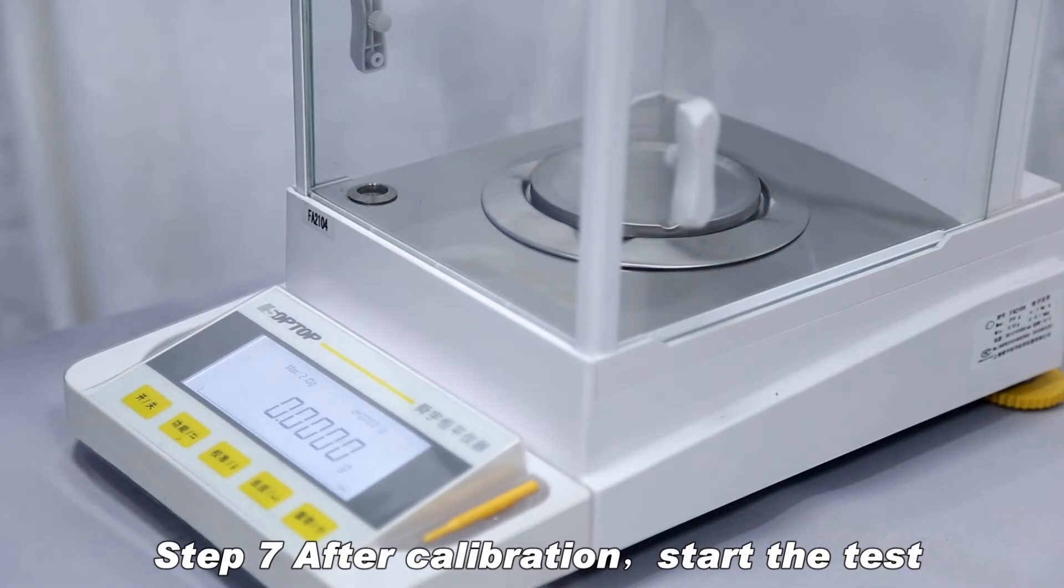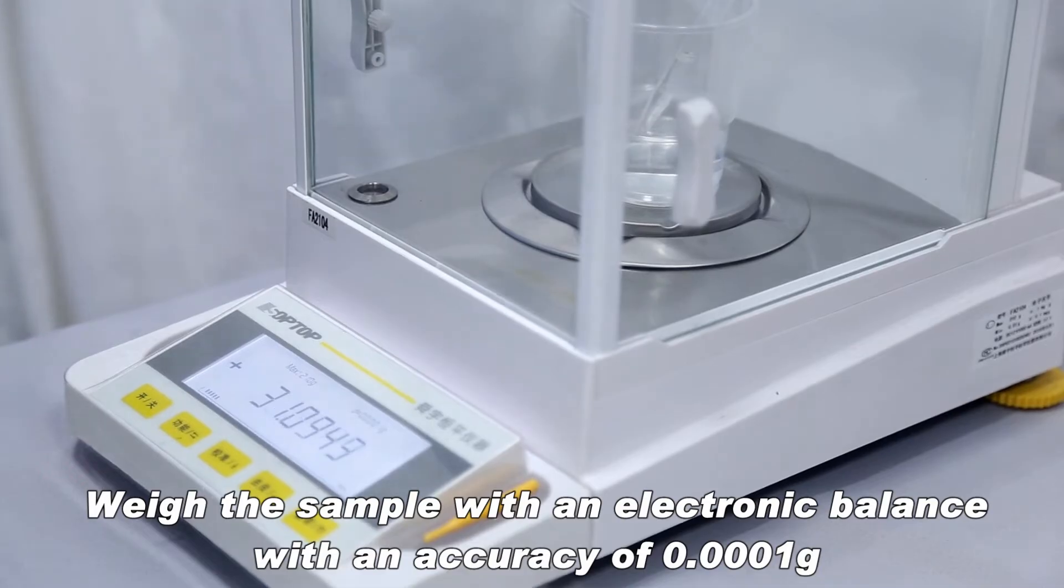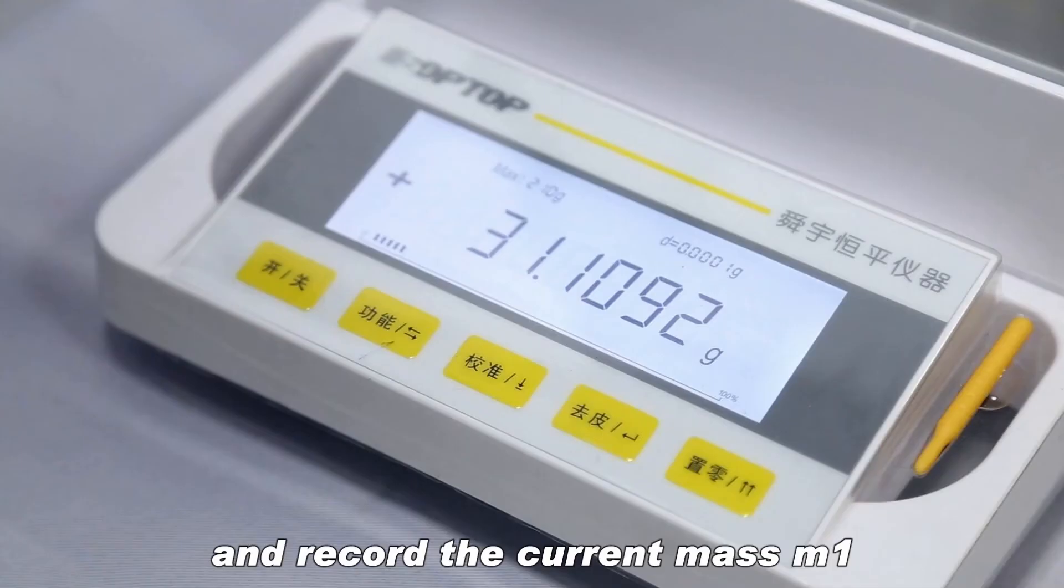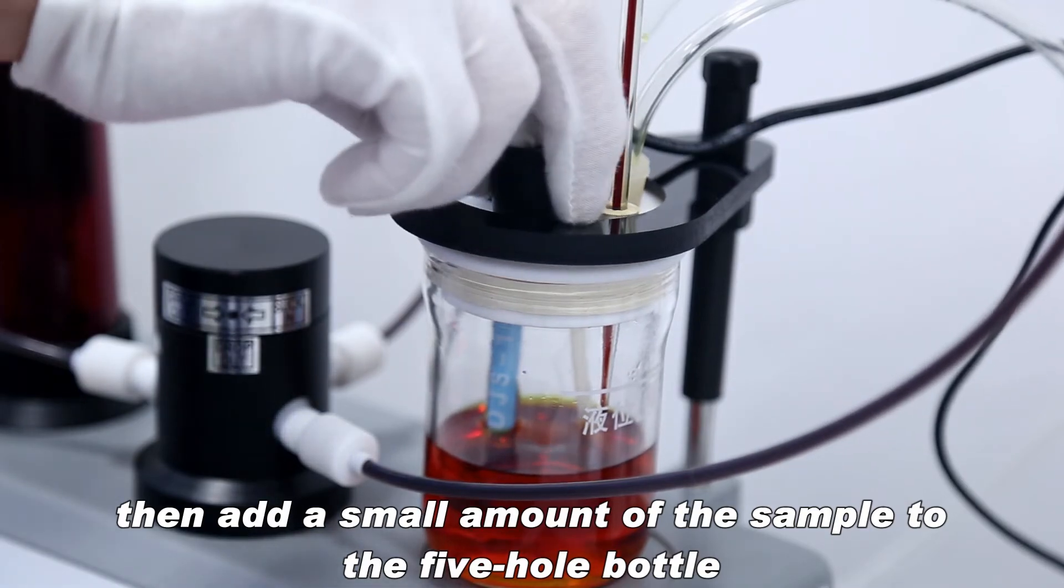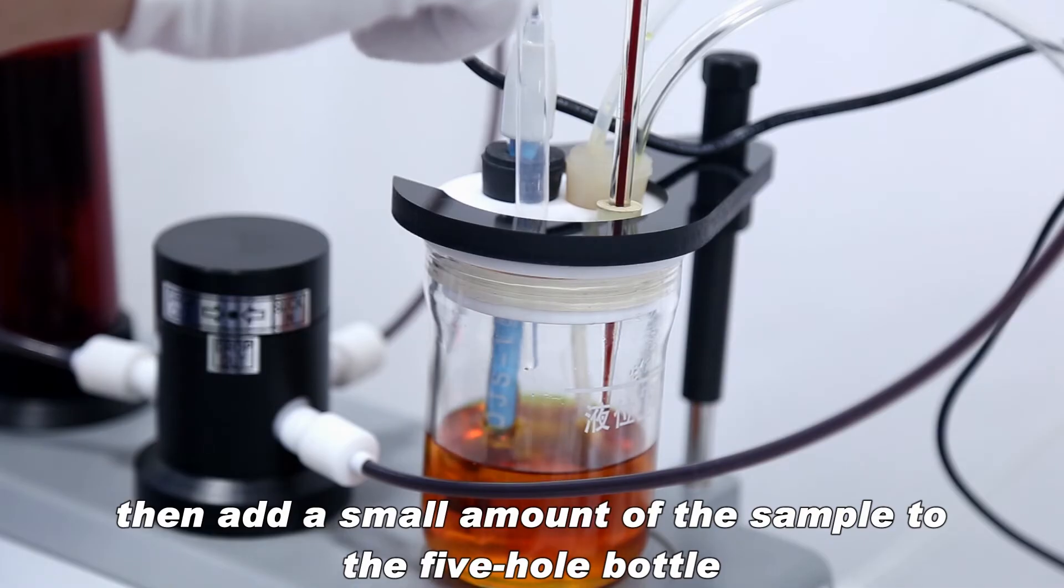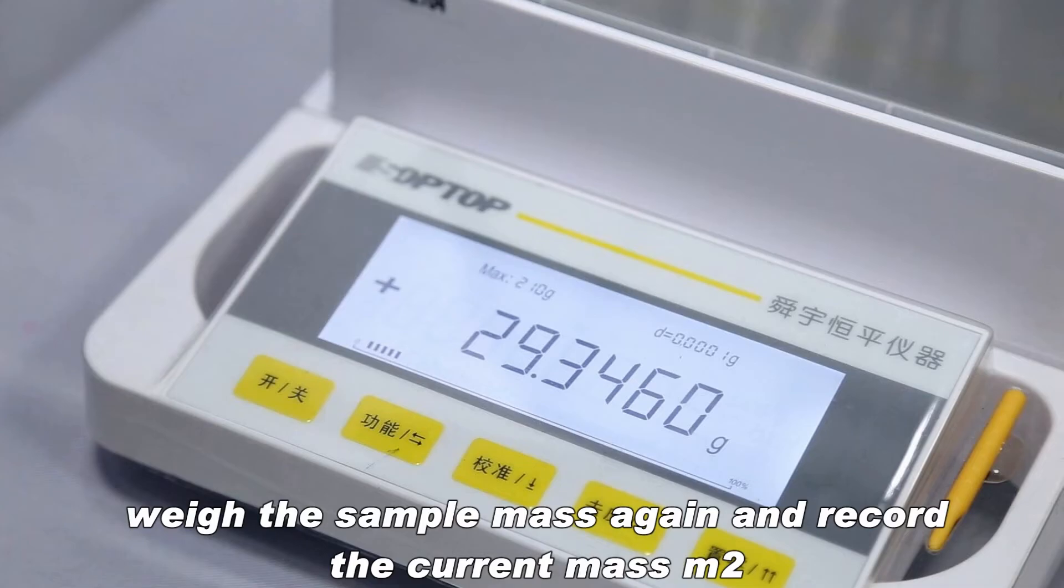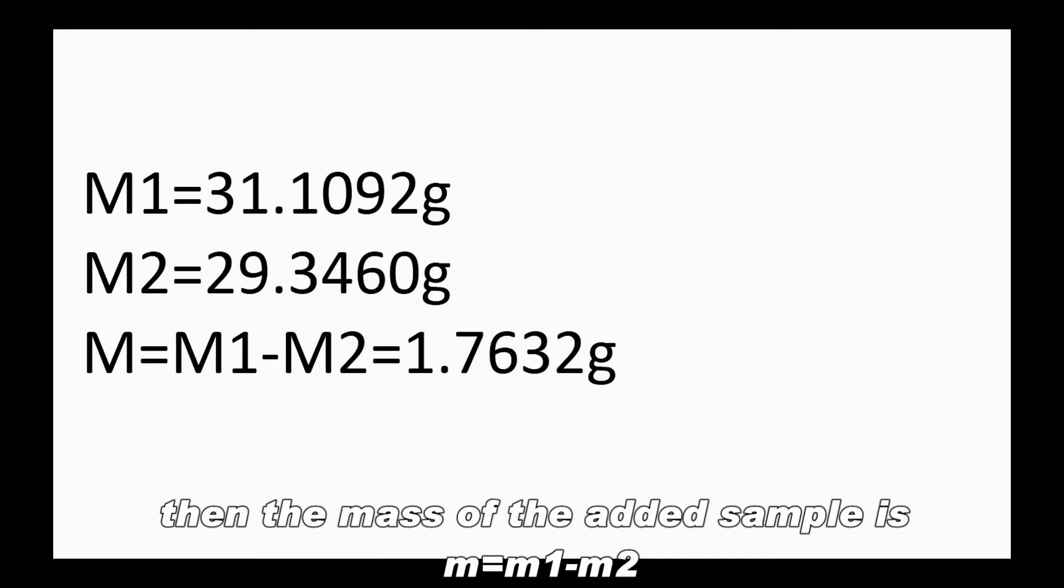After calibration, start the test. Weigh the sample with an electronic balance with an accuracy of 0.0001 grams and record the current mass M1. Then add a small amount of the sample to the 5-hole bottle. Weigh the sample mass again and record the current mass M2. Then the mass of the added sample is M equals M1 minus M2.